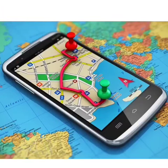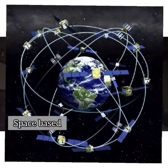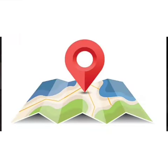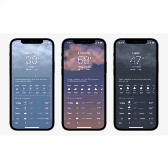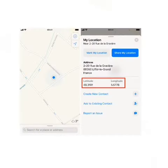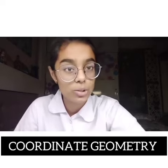I find math around me in GPS. The Global Positioning System, or GPS, is a space-based navigation satellite system that provides information on location and time in all weather conditions. While I was using GPS, I noticed that the longitude and latitude of the place are its coordinates. The concept used in GPS is coordinate geometry.